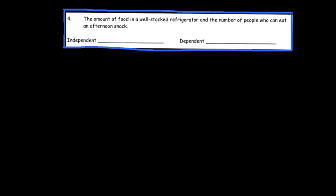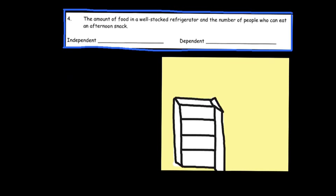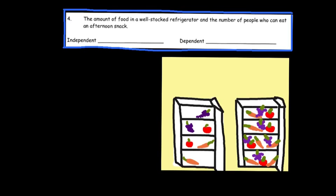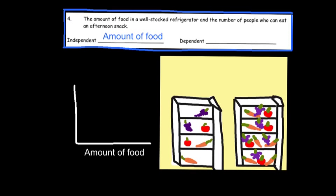The amount of food in a well-stocked refrigerator and the number of people who can eat an afternoon snack: if I have an empty refrigerator, I can't feed very many people. If I have a little food, I can feed some; if I have a lot, I can feed more. The number of people that can eat depends on the amount of food I have. Therefore, the independent variable is the amount of food in my refrigerator, and the dependent variable is the number of people who can eat a snack. As the amount of food increases, the number of people who can eat also increases.